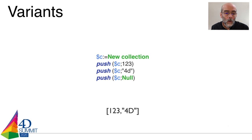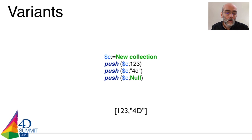When you use this kind of code, you have a collection, you have your own version of the push command, your own method, and you can call your method passing it a number, a text, or attempting to pass a null value.